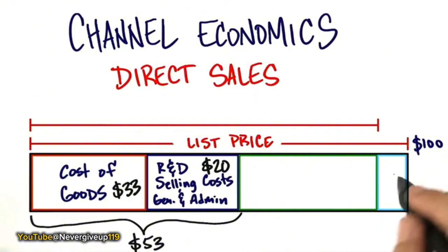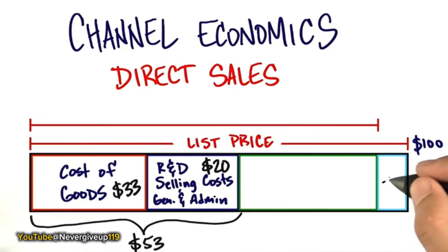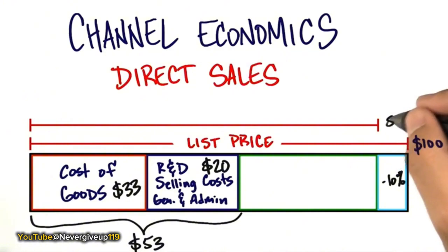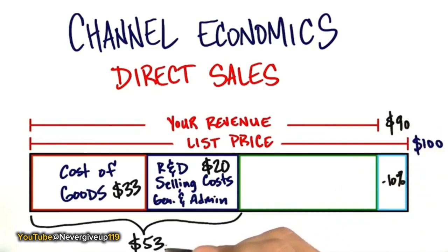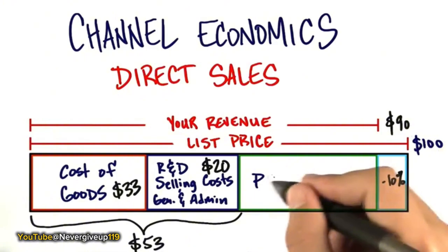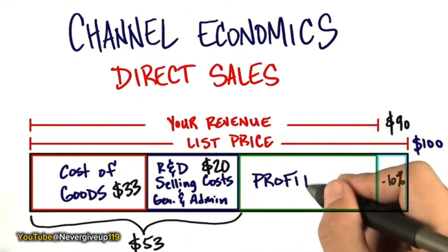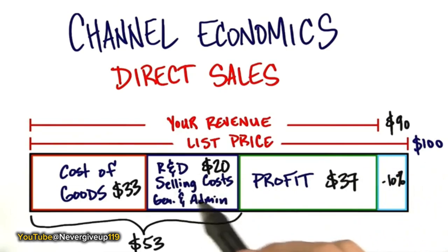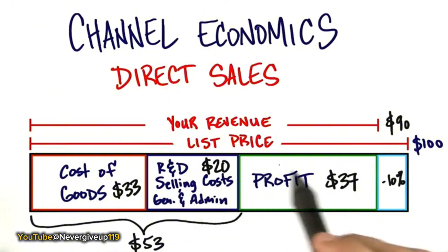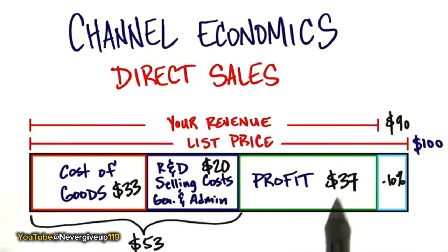Next, consider the costs of R&D — engineering — plus the cost of your direct salespeople, commissions or direct sales compensation, and general and administrative costs: leases, lunches, and so on. That might be another $20, bringing the total to $53 just to keep the lights on. No end user pays list price, so assume a 10% discount — your revenue is not $100 but $90. You're getting $90 but spending $53, leaving $37 in profit. Your selling costs were embedded in the SG&A, and you made $37 selling directly.